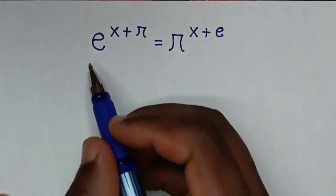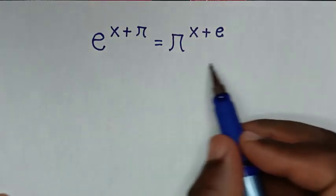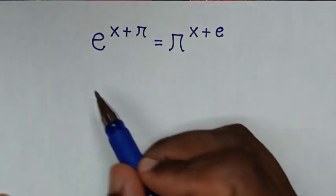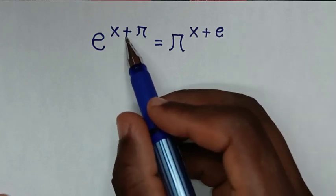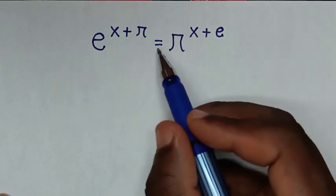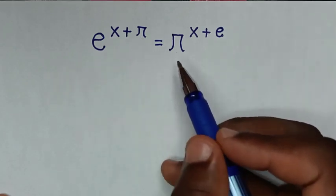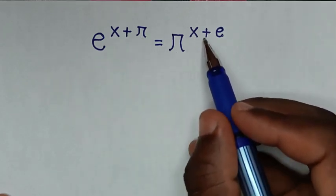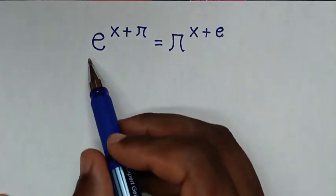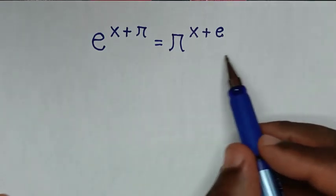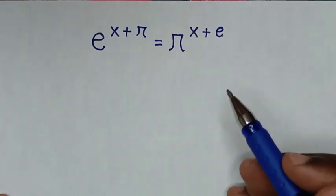Hello, you are welcome to solve this math problem: e to the power of x plus pi is equal to pi to the power of x plus e. We need to find the value of x from this equation.